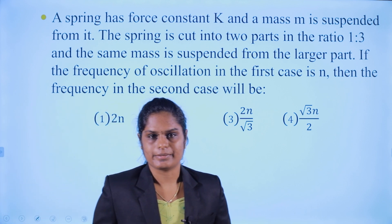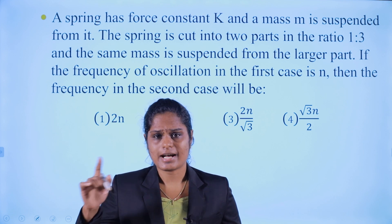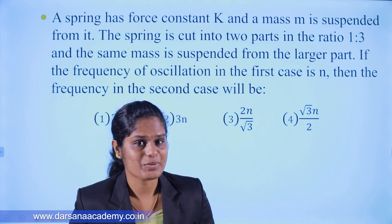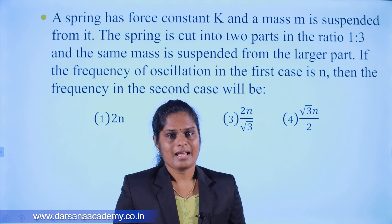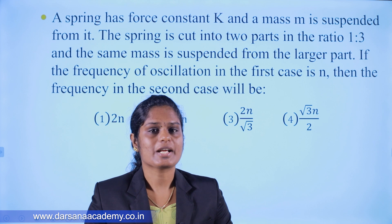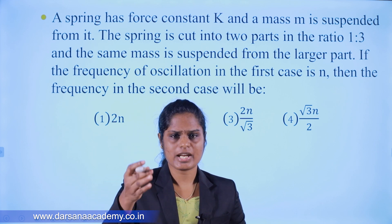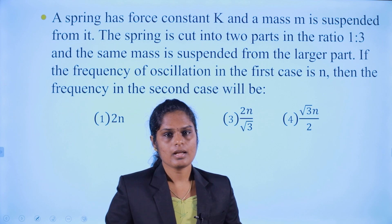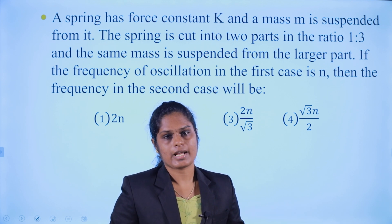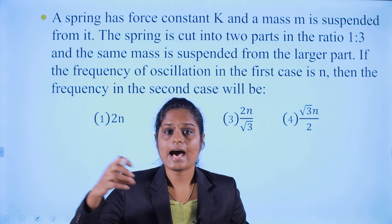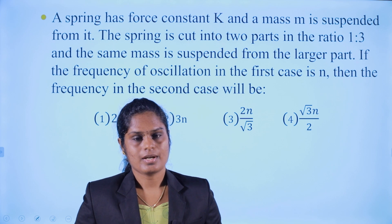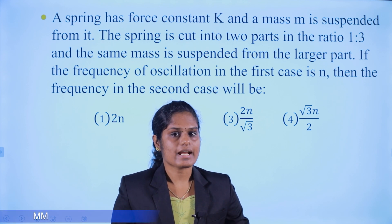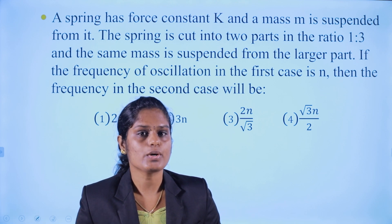We have a spring here. We are going to talk about spring constant k and mass m. We are going to talk about simple harmonic motion and the time period 2π√(m/k). The spring constant k has a ratio of 1 to 3. We will discuss the frequency of oscillation. Now, the spring constant is inversely proportional to length.